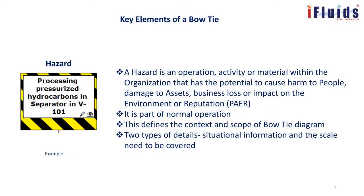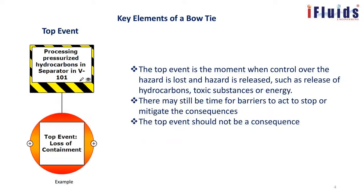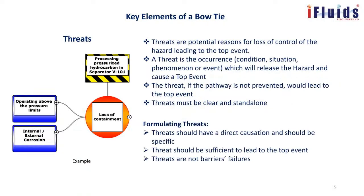To start with, we need to first capture the hazard. Hazard is an operation, activity, or material within the organization that has a potential to cause harm to people, damage to assets, business loss, or an impact on environment or reputation. Next is the top event — the moment when control over the hazard is lost and the hazard is released, such as a release of hydrocarbon like LPG, natural gas, toxic substances, or energy. There may still be time for barriers to act to stop or mitigate consequences after the top event.